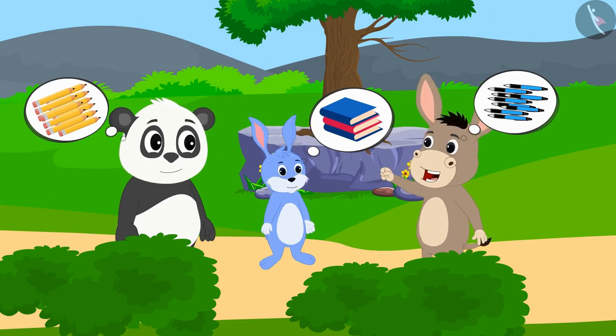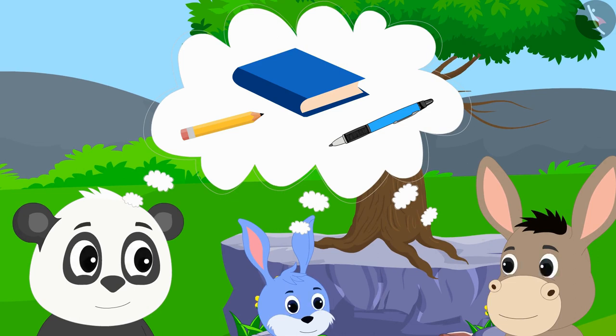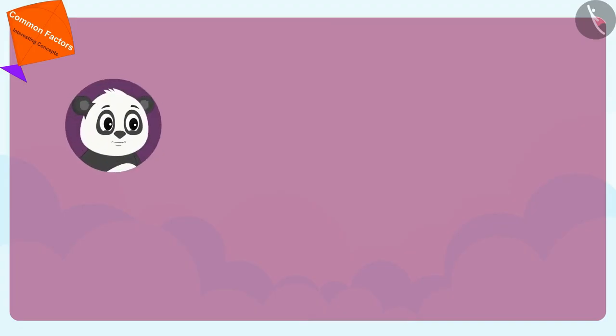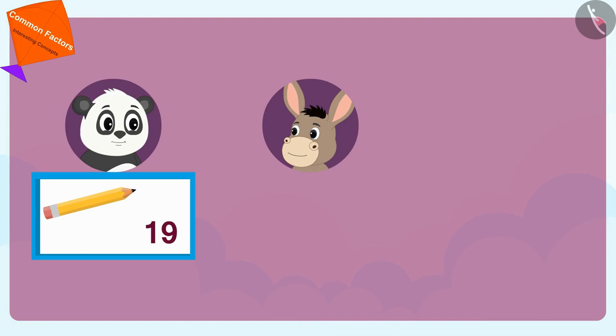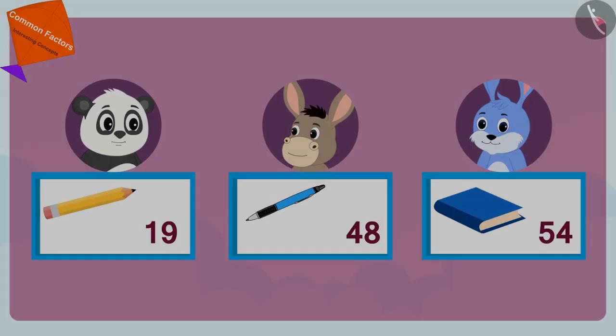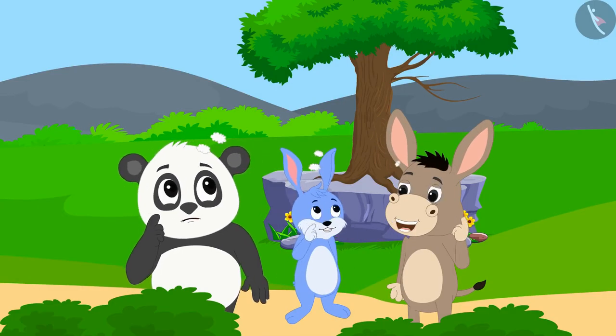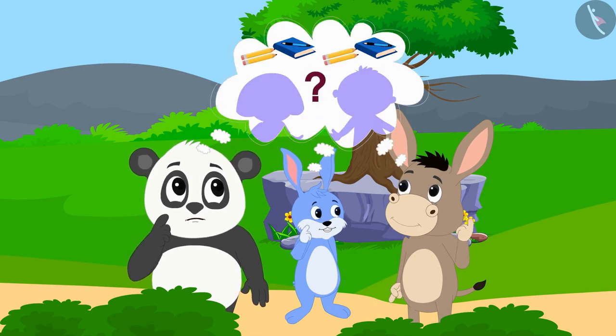Golu has brought 19 pencils, Bola has brought 48 pens, and Bunny has brought 54 notebooks. Now all three friends are thinking, what is the maximum number of children that they will be able to give these things to?